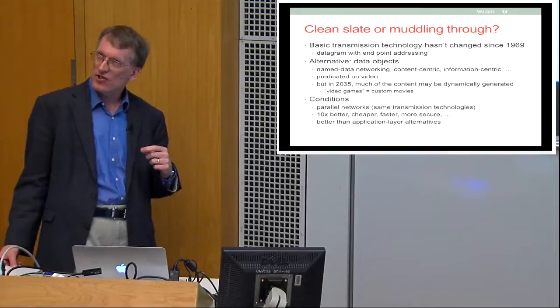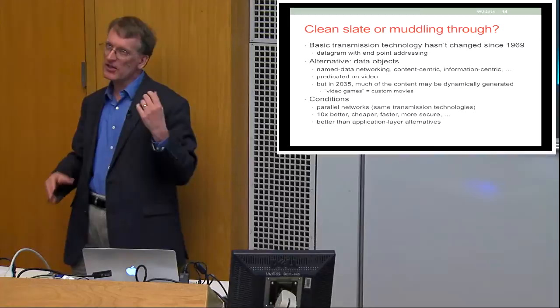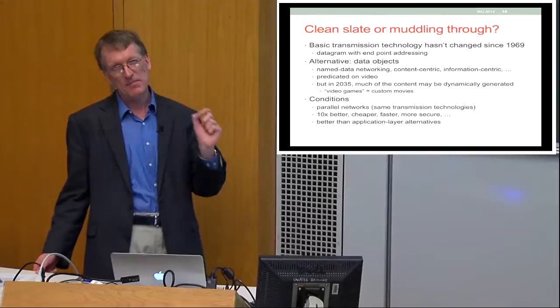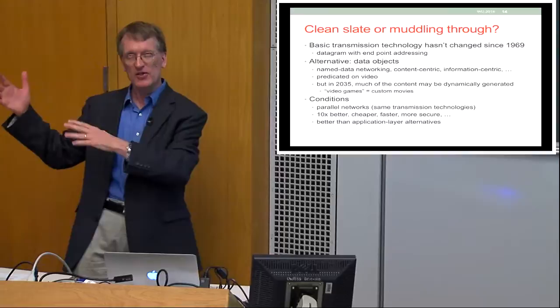If I were to guess, looking at the 2035 timeframe, we'll probably see a much larger fraction of dynamically generated content as opposed to the kind of cacheable static stored content that dominates the internet today. So having a new architecture predicated on static objects may well be solving yesterday's problem — or maybe today's — as opposed to what is likely going to be the next wave of content, given what's happening with graphics advances and elsewhere.